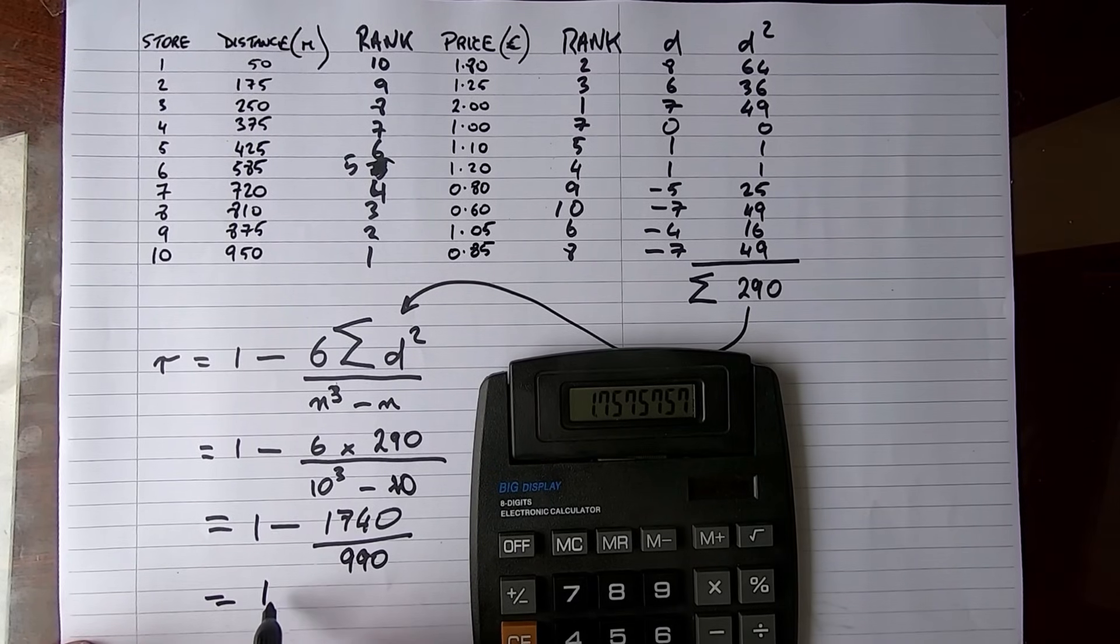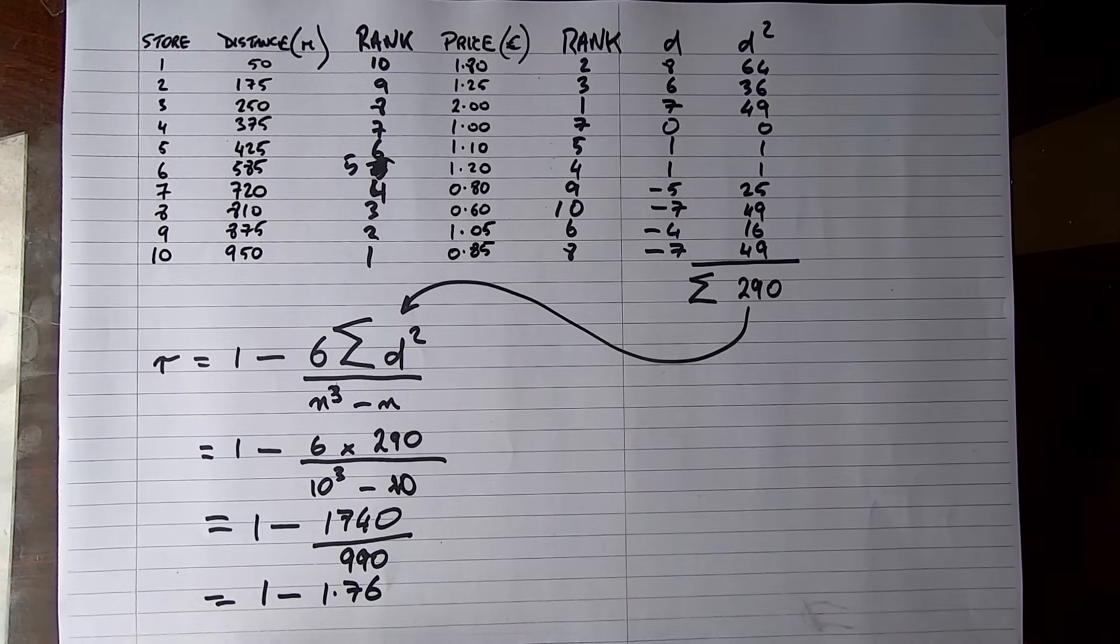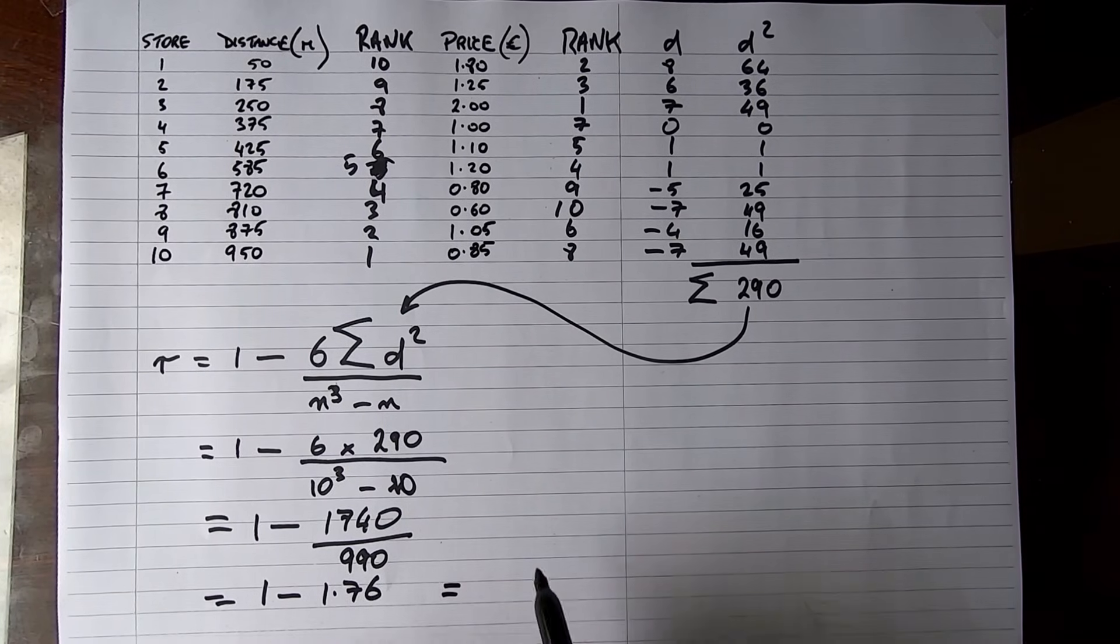So my 1740 figure on my calculator divided by 990 equals 1.757. I'll round it to two decimal places: 1 minus 1.76. That's our calculations almost done, and that value there is equal to—I'll do this in my head—1 minus 1.76 is equal to minus 0.76. So that's now our value for R.